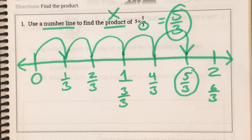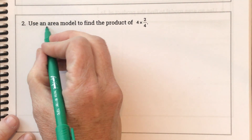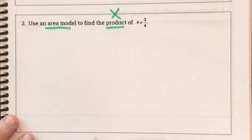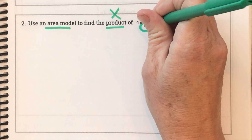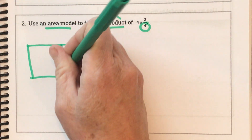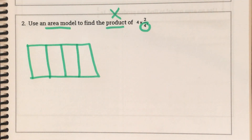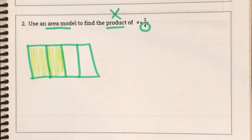If I went too fast, pause the video and make sure you have your notes written down. Let's look at our next problem. This time it says use an area model to find the product of four times two-fourths. A denominator of four means each whole is cut into four pieces. The numerator is two, so I have two of those fourths shaded.